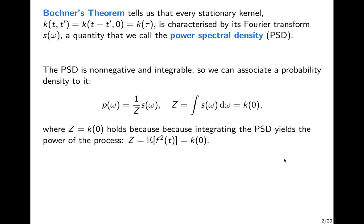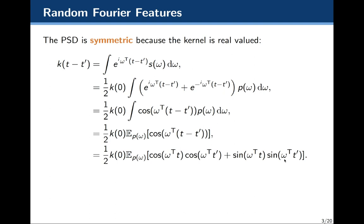If we integrate the power spectral density — in this case we call that Z, the normalizing constant, or K of zero — and divide by this constant, we get a density. We know K of zero holds because integrating the power spectral density yields the power of the process. Now I'd like to walk through a little bit of algebra to get the random Fourier feature approximation for the kernel.